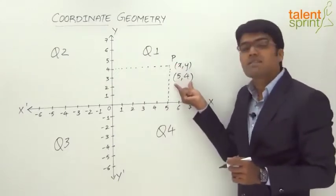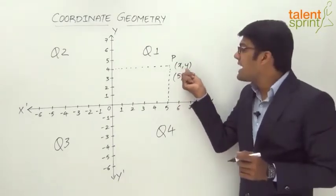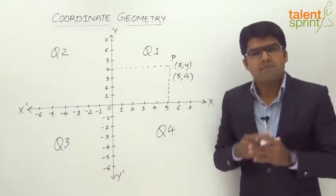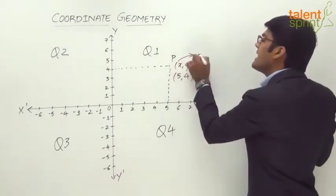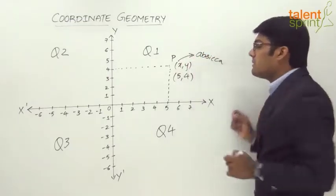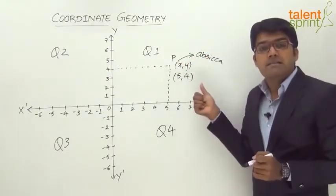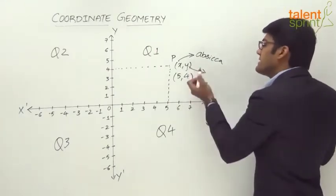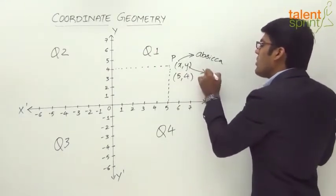This is known as an ordered pair, and the values x and y are called coordinates. Specifically, x is known as the abscissa — the horizontal distance — whereas the vertical distance y is known as the ordinate.